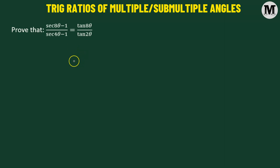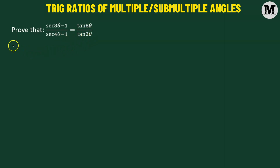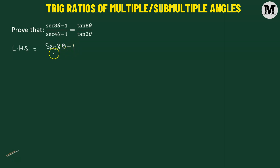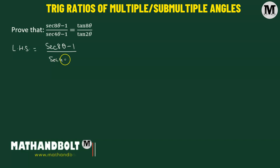We need to prove that secant of 8θ minus 1 divided by secant of 4θ minus 1 equals tangent of 8θ over tangent of 2θ. I'll begin our problem from the left hand side. We have secant of 8θ minus 1 divided by secant of 4θ minus 1.